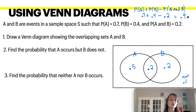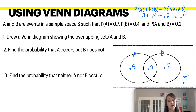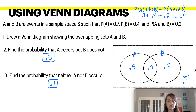Since 0.9 is the probability of events happening, there's a 0.1 chance — or 10% — that neither occurs. To find the probability that A occurs but B does not: A occurs with probability 0.7, but 0.2 of that also occurs with B, so the A-only answer is 0.5. The probability that neither A nor B occurs is 0.1, which is outside the Venn diagram.